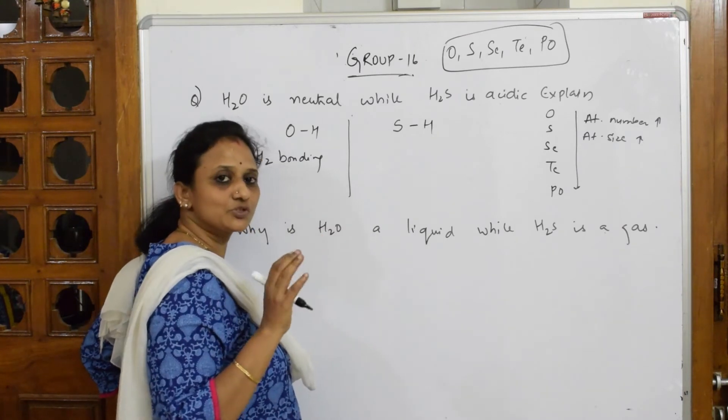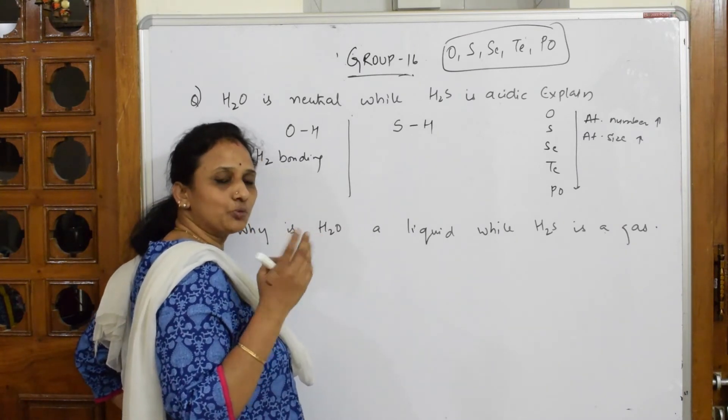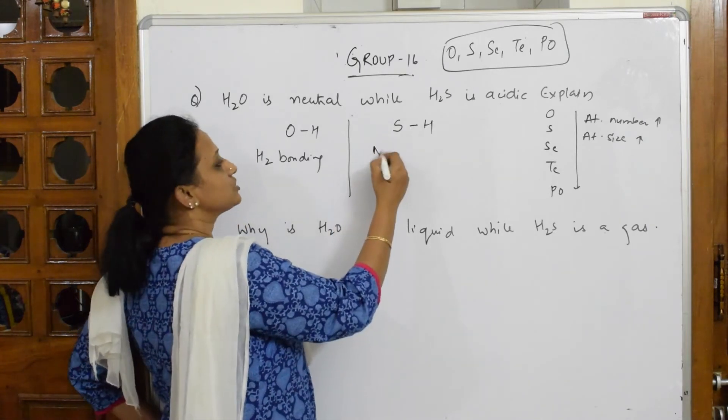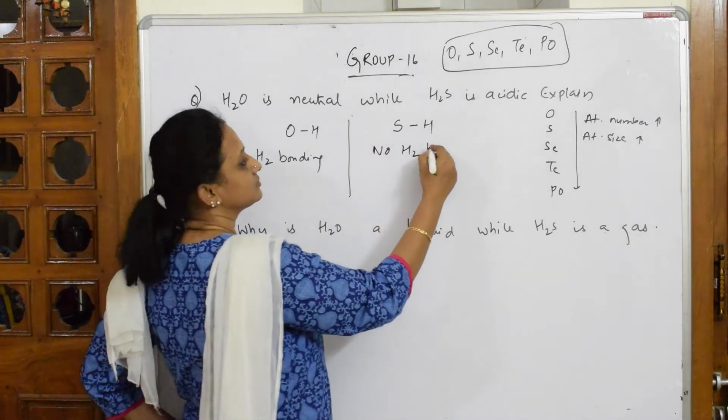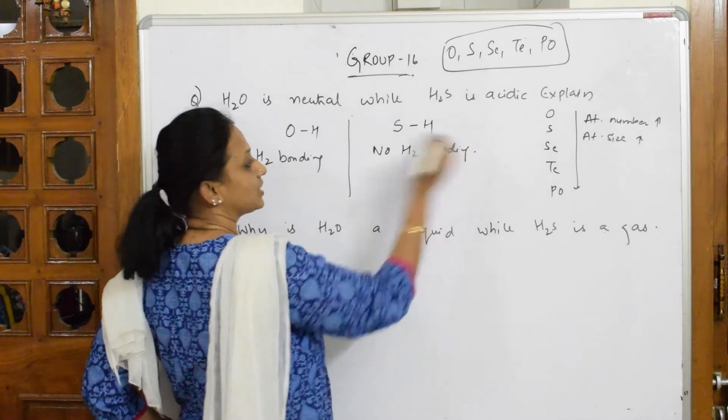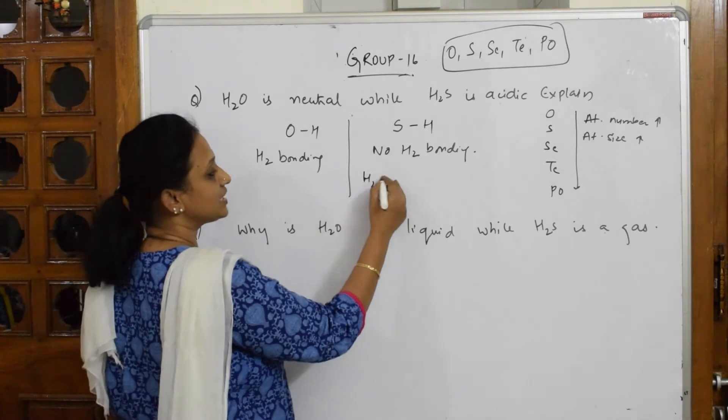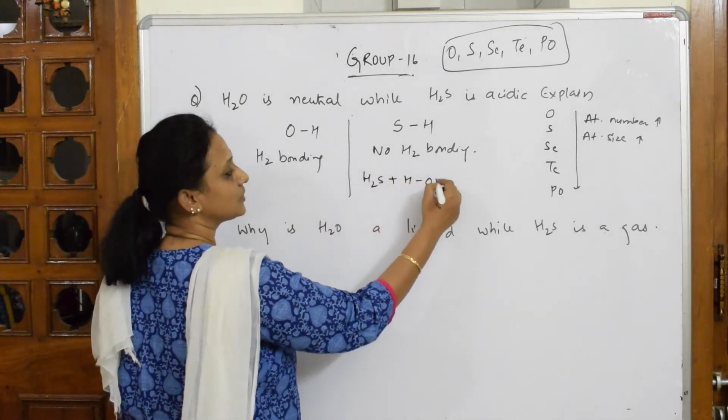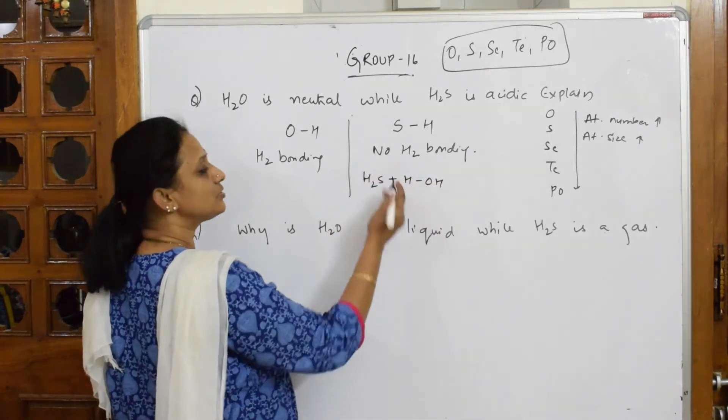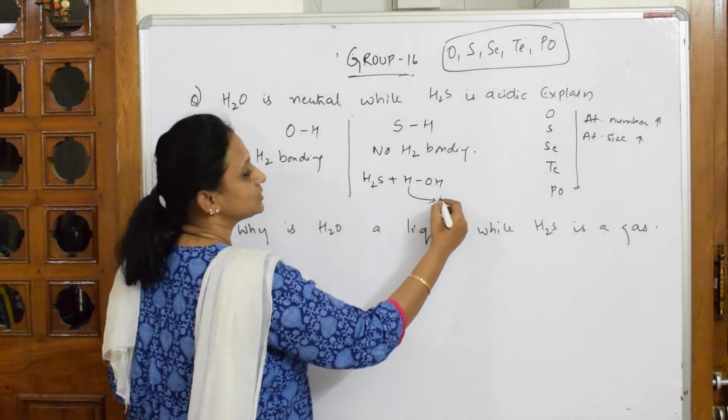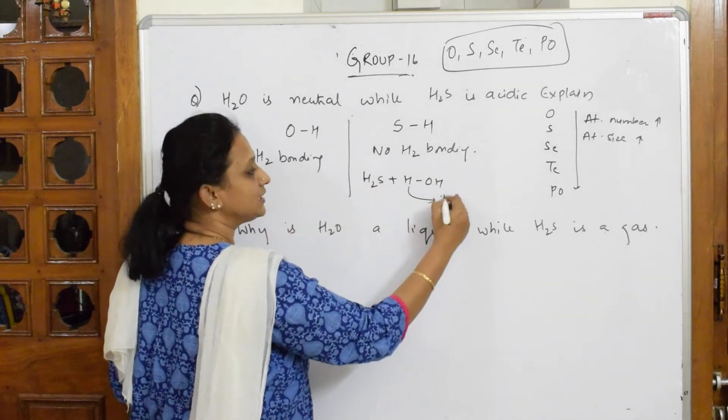It's going to show hydrogen bonding. Here in sulfur and hydrogen, the electronegativity difference is very less. It's almost no, that is 2.4, 2.2, very very close. So no hydrogen bonding observed. When there is no hydrogen bonding, when I take this H2S, when I dissolve this in water, what does it do?